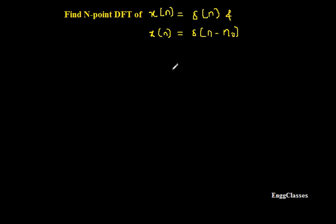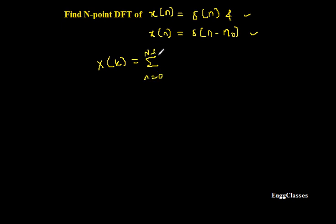In this example, let x(n) = δ(n) in the first case, and x(n) = δ(n - n₀) in the second case. The task is to find the DFT. To find the DFT of any sequence, I have the formula: X(k) = summation from n=0 to N-1 of x(n) · W_N^(k·n). This is the formula to find the DFT of any sequence.